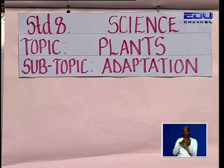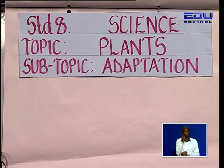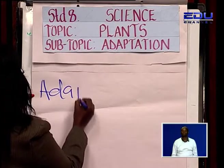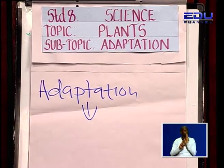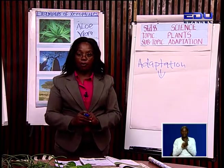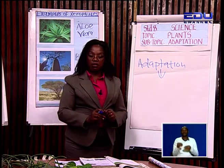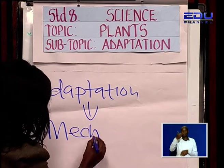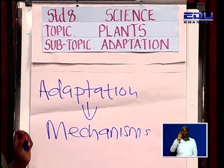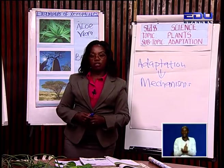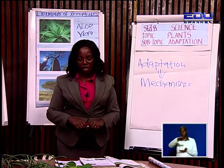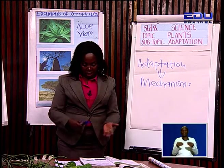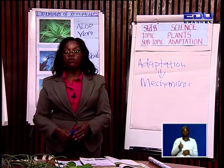Before we look at adaptation, we must understand what we mean by adaptation. What is the meaning of adaptation? Adaptation refers to mechanisms that help a given plant to be better suited in a given environment or habitat, enabling it to survive. Different plants have adaptations that allow them to survive in their particular environments.